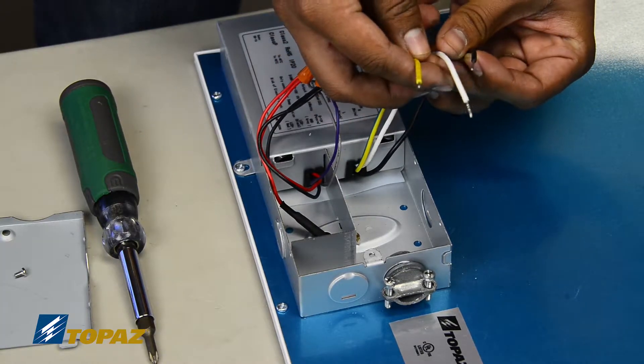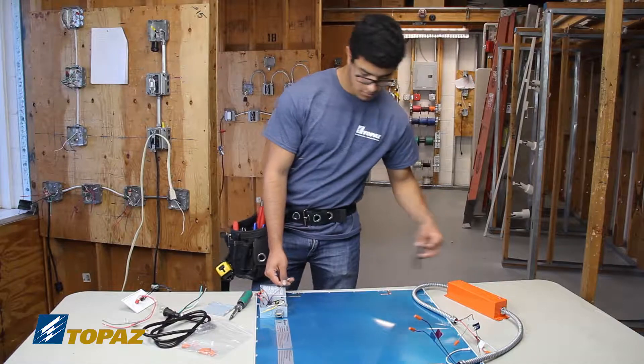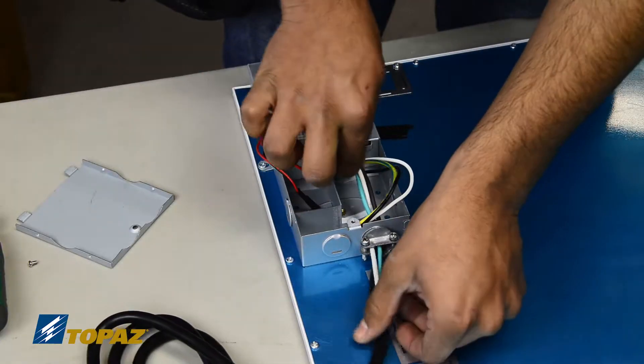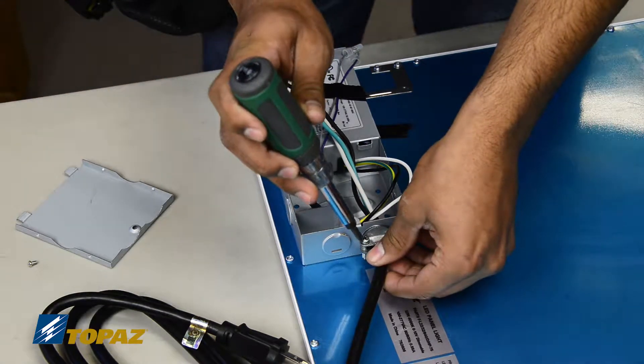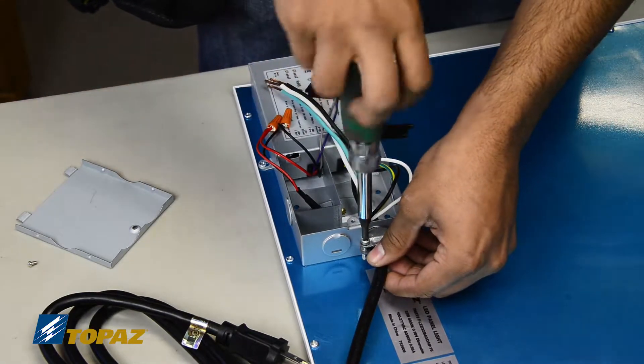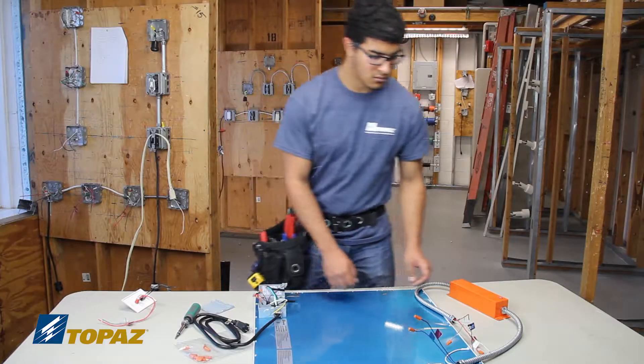We're going to pull the purple and gray lead out, just tape it to the side. We are going to be using an SJ cord to simulate our power supply. In the field you'd be using your typical wiring methods, MC cable, Romex, depending upon your application.